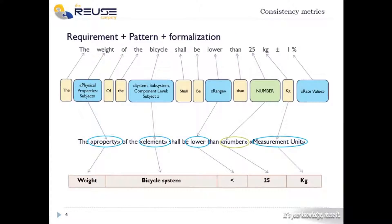To do the analysis, we've defined a pattern group covering the two main requirement statement structures by two different patterns, which will generate the properties. We've already selected the subsystems we want to control for the inconsistency analysis from the product breakdown structure defined in the system conceptual model. Finally, we've created the properties of the elements we want to identify, defining the property itself, the applicable element, the numeric value, and the operator.